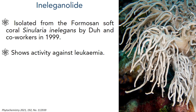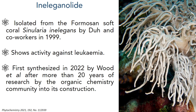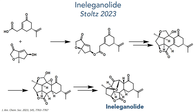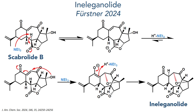Preliminary investigations into its biological effects show that it has some activity against leukaemia, but its main attraction to chemists is the difficulty in synthesising its complex structure. It would take until 2022 for the first total synthesis to be published, which was achieved by the Wood Group. Since then, several more syntheses have been published, including one by the Stoltz Group, which I covered on this channel, and also another work by the Fersner Group, which was their synthesis of scabralide B, where they showed that scabralide B could be converted to ineleganolide by simply treating it with base, revealing a possible biosynthetic link between these two molecules.